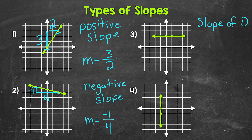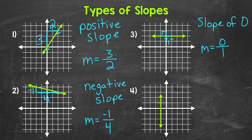In terms of rise over run, let's look at our two points. Starting with the rise — what's the vertical change? Zero. There isn't any vertical change between these two points, so the rise is zero. For the run, we move over one unit to get to the other point, so our run is one. Slope equals the rise of zero over the run of one — zero over one, which equals zero. Our third type of slope: slope of zero.